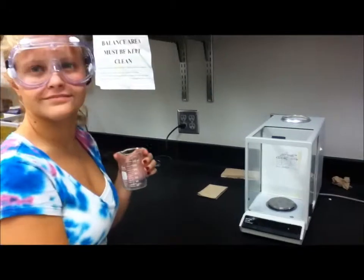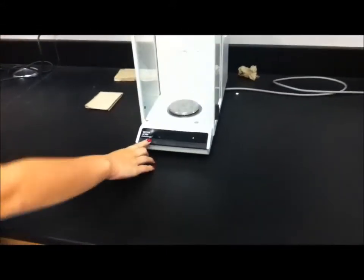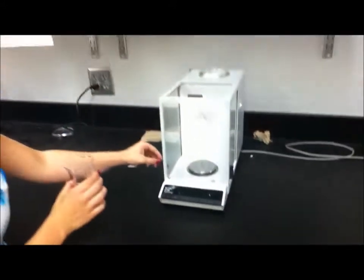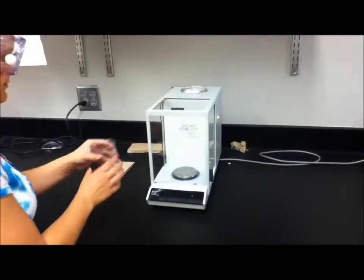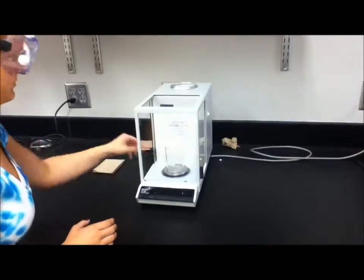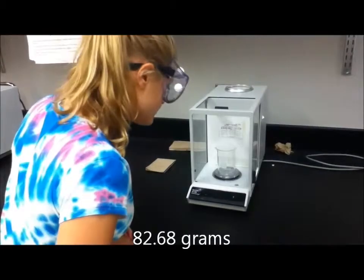Anna is first taring the balance to make sure that the scale reads zero. Then she places the beaker in the balance, making sure to close the door. Make sure to record the reading in your data table under mass of the beaker.